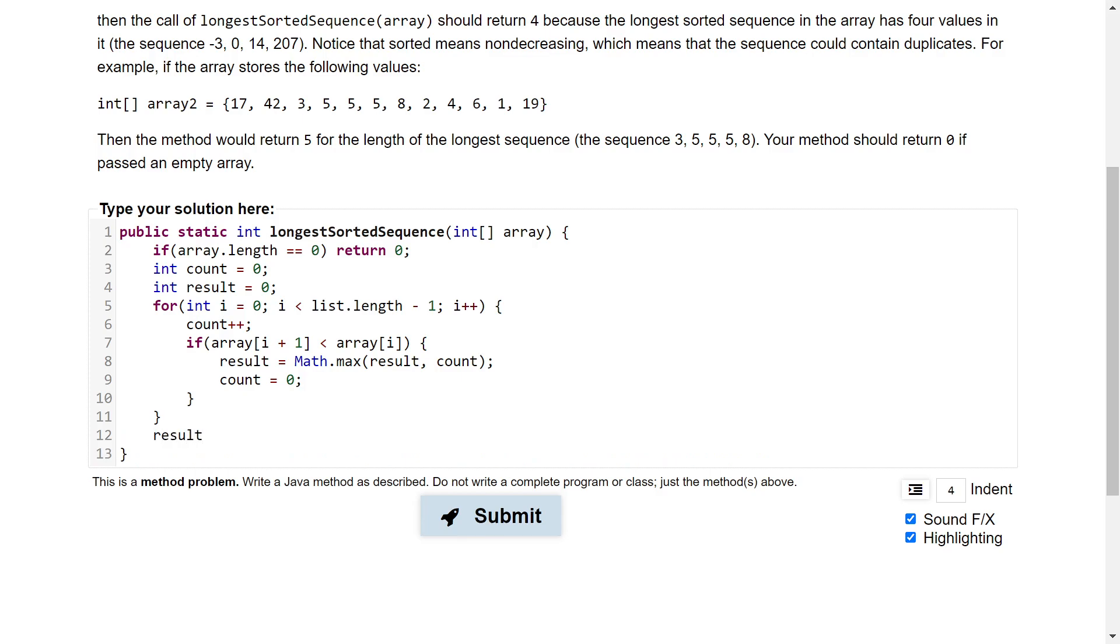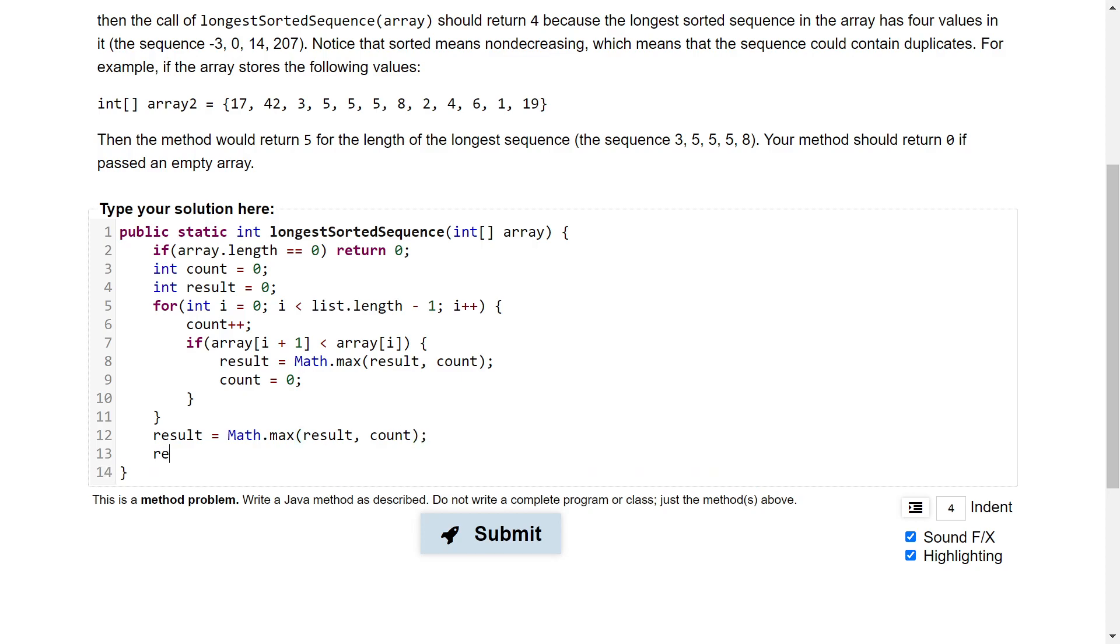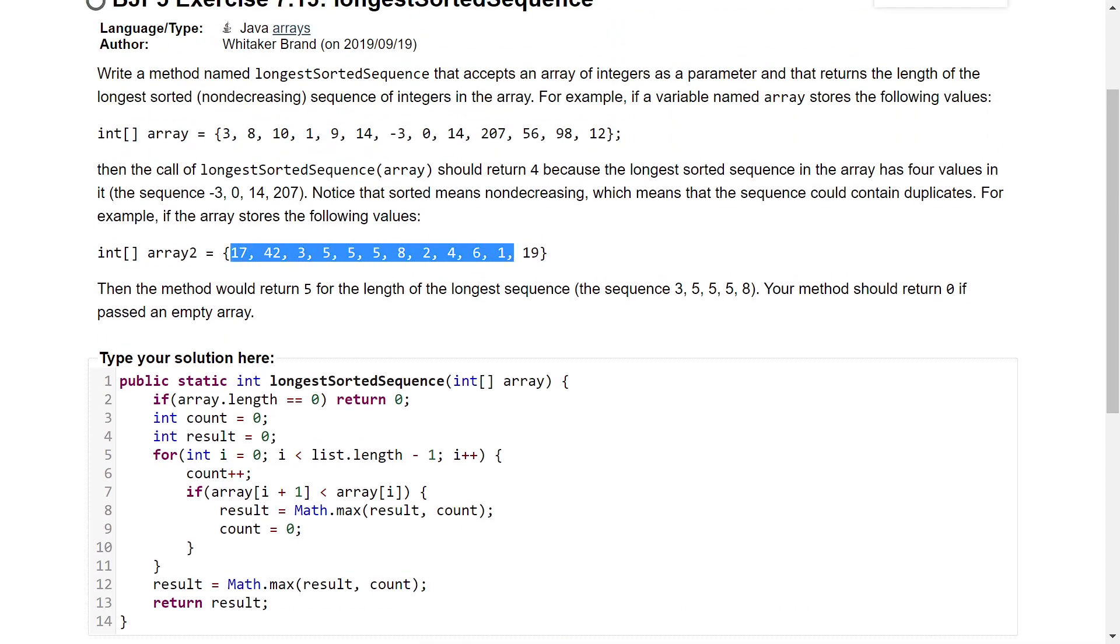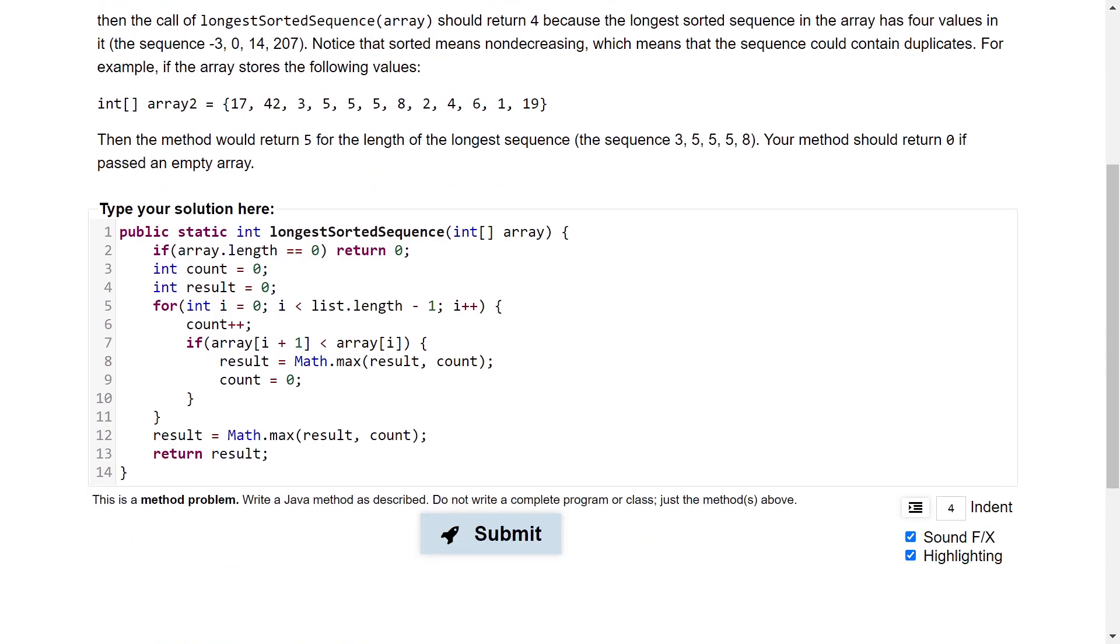And finally, we're going to take the result one more time. And before we do that, we're going to go ahead and return result. So the reason that we take the maximum for the result at the very end one more time is because there's a chance that our sequence of numbers continues to increase all the way to the end. And if it increases all the way to the end, well, you'll notice that result is never changed from its initial value of zero because our result only changes when the next number is decreasing. But you'll notice if our sequence of numbers goes all the way to the end, there will not be a following number that is decreasing to stop this for loop and therefore change our result from its initial value of zero, which is why we take the maximum at the very end.